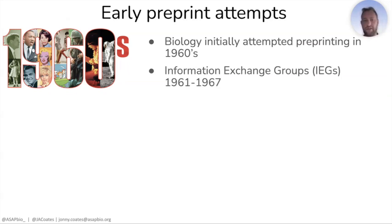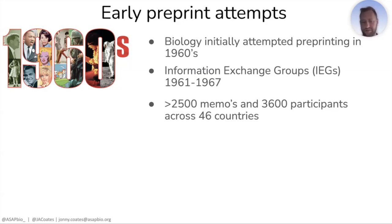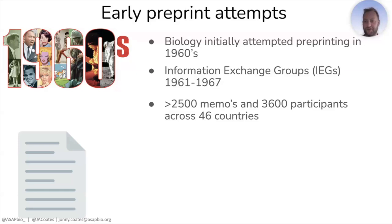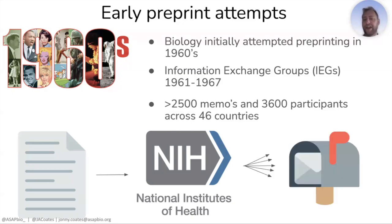Biology's initial official attempts at preprinting occurred in the 1960s. These were called the Information Exchange Groups. They ran from 1961 right up to 1967 — not a huge period, but they were really well received. In that six-year period, two and a half thousand memos — what we'd call preprints — were shared across three and a half thousand participants around 46 different countries. For the 1960s, this is an amazing buy-in. You sent your manuscript to the NIH, who made physical copies and mailed them out to those 3,600 participants.